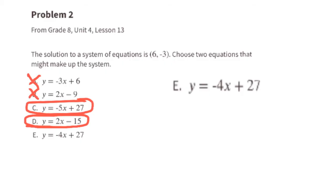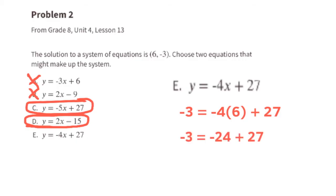Let's go ahead and see if equation E also might make up the system. Substitute x with 6 and y with negative 3. The equation reads negative 3 equals negative 24 plus 27. Negative 24 plus 27 equals positive 3, and since negative 3 does not equal positive 3, equation E does not make up the system.